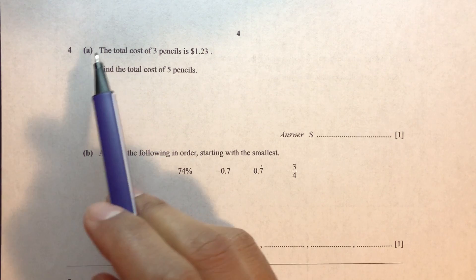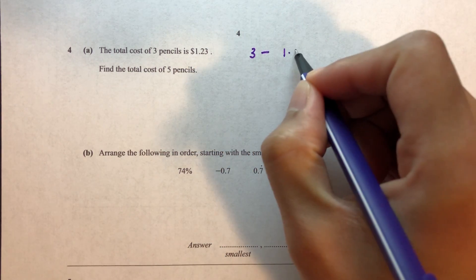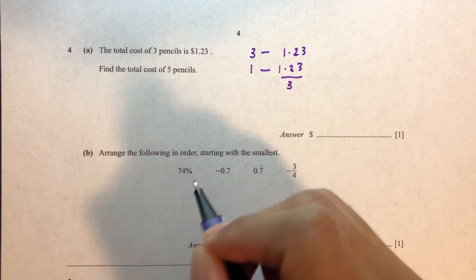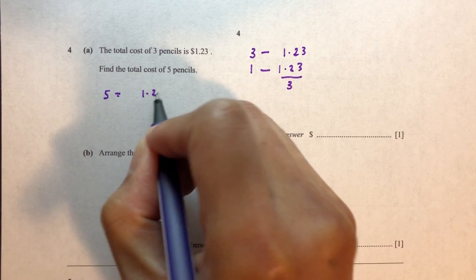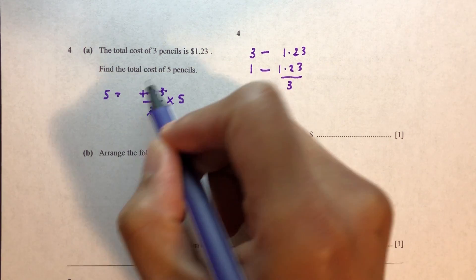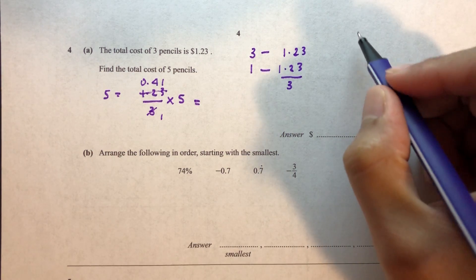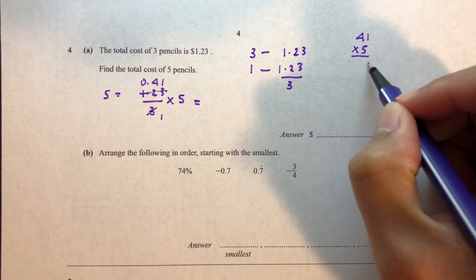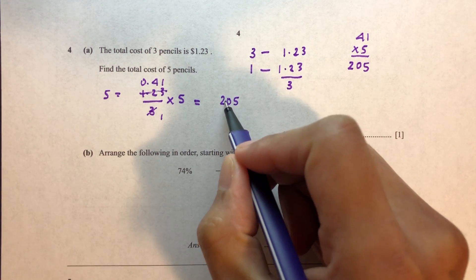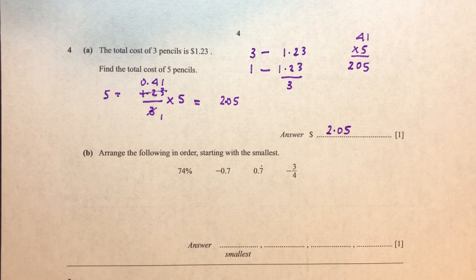Question number 4. The total cost of three pencils is 1.23. The cost of one pencil is 1.23 divided by 3. The cost of five pencils is 1.23 divided by 3, times 5. Dividing by 3 gives 0.41; 41 times 5 is 205, with two decimal places, so the answer is 2.05.